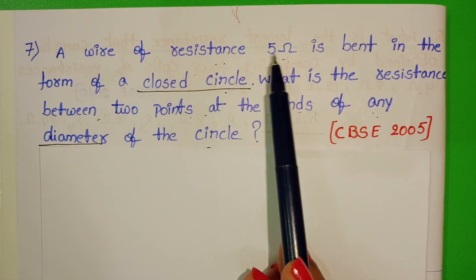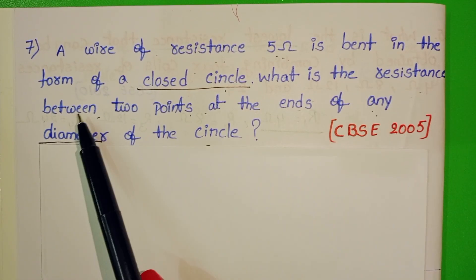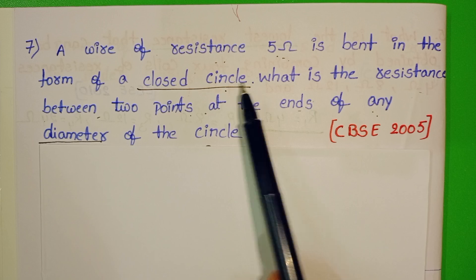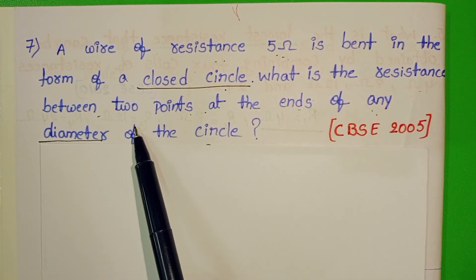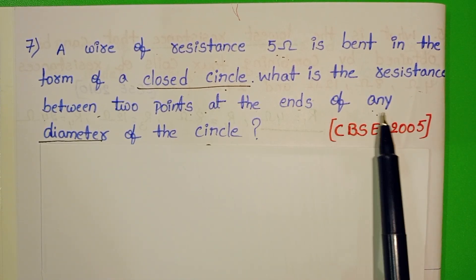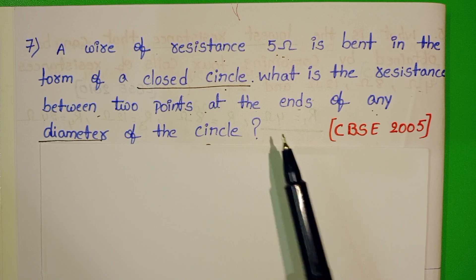A wire of resistance 5 ohm is bent in the form of a closed circle. What is the resistance between two points at the ends of any diameter of the circle?